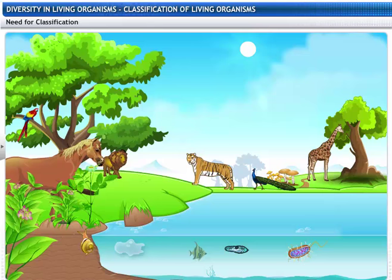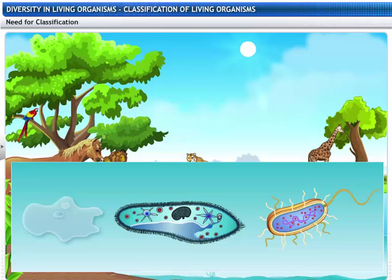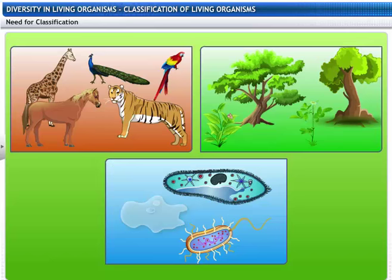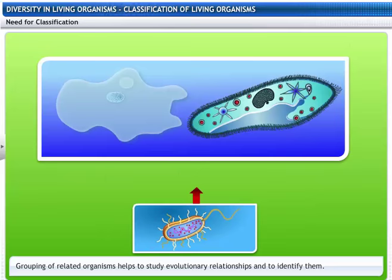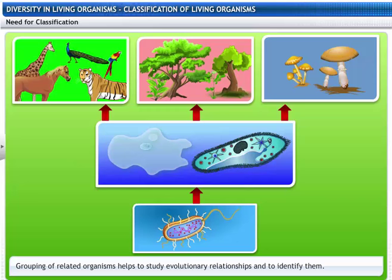Organisms differ in form, structure, and mode of living. So they need to be grouped according to their similarities. The grouping of related organisms helps to study evolutionary relationships and to identify them.